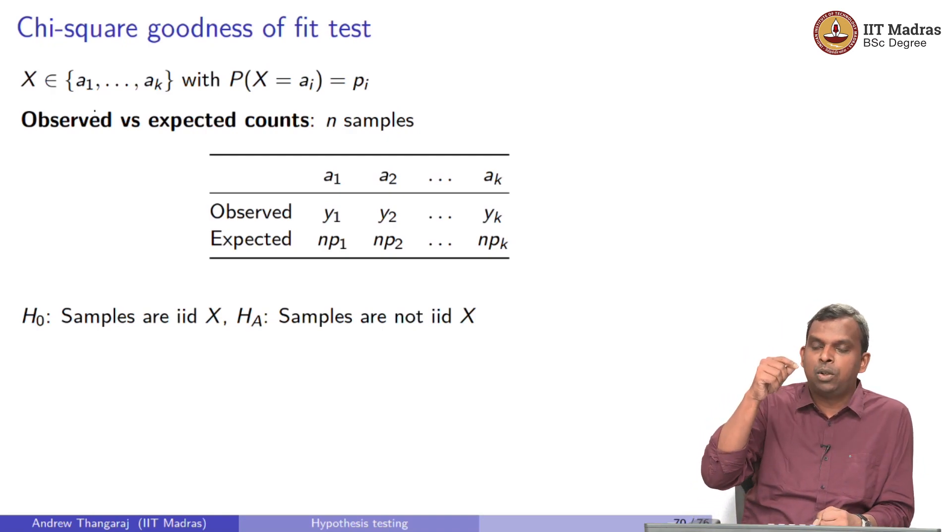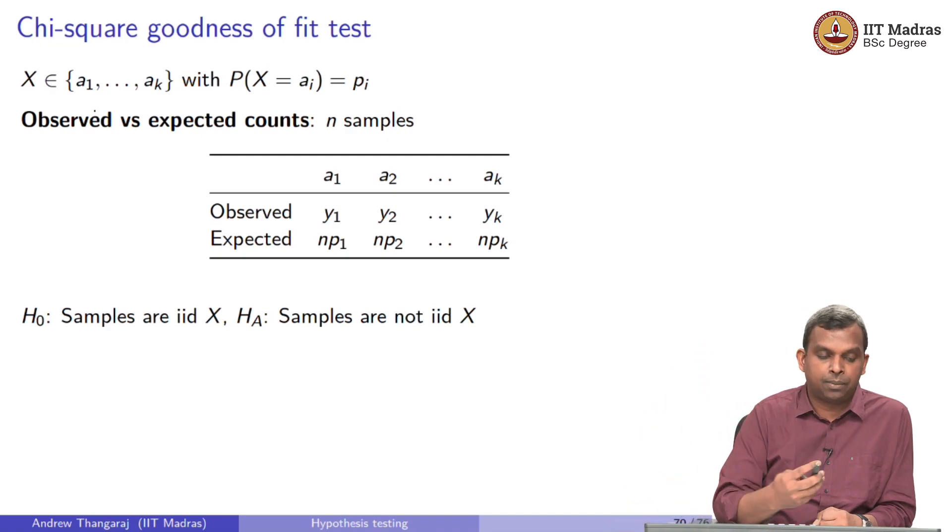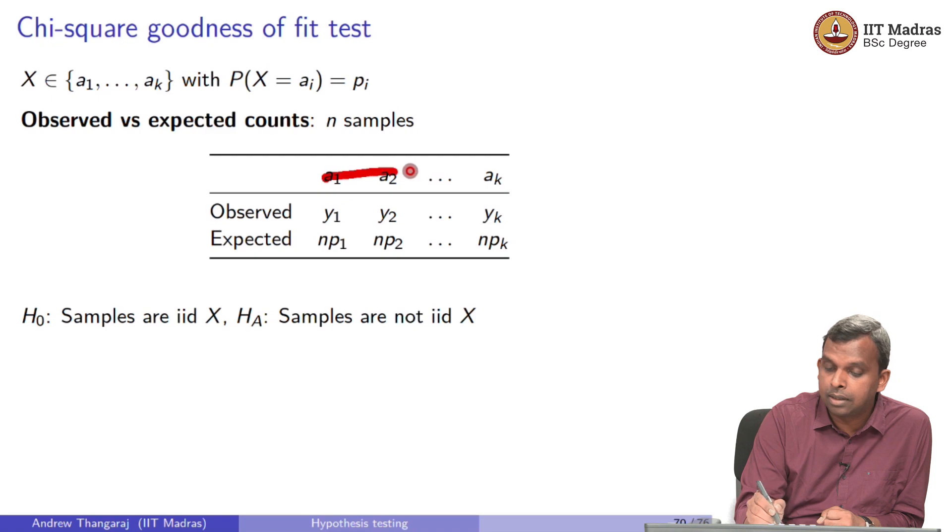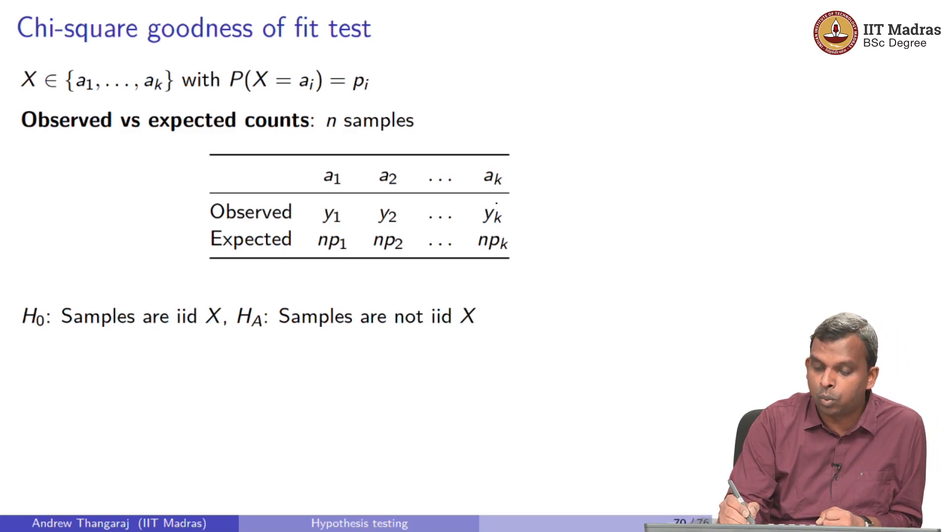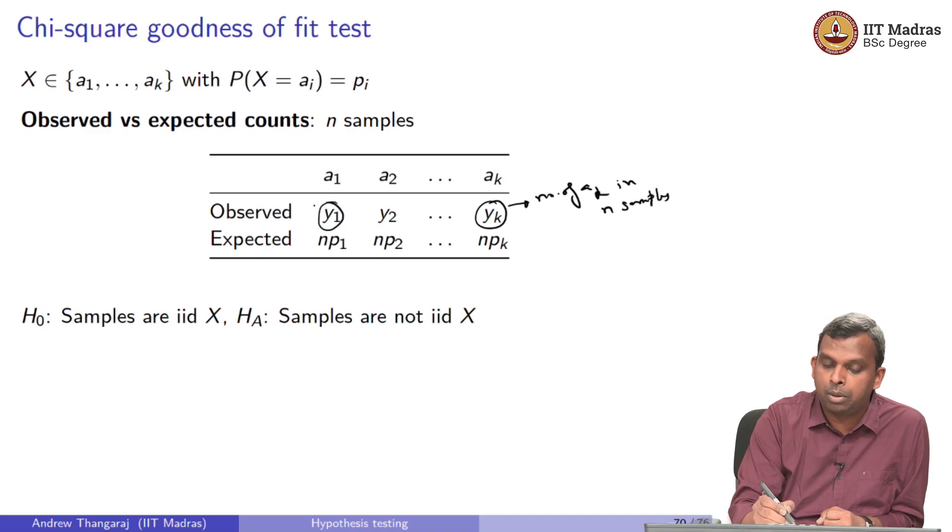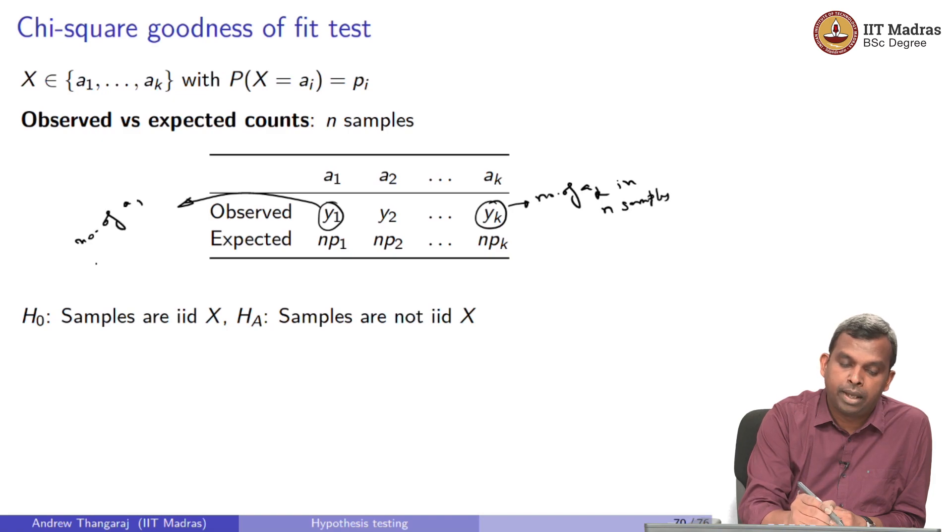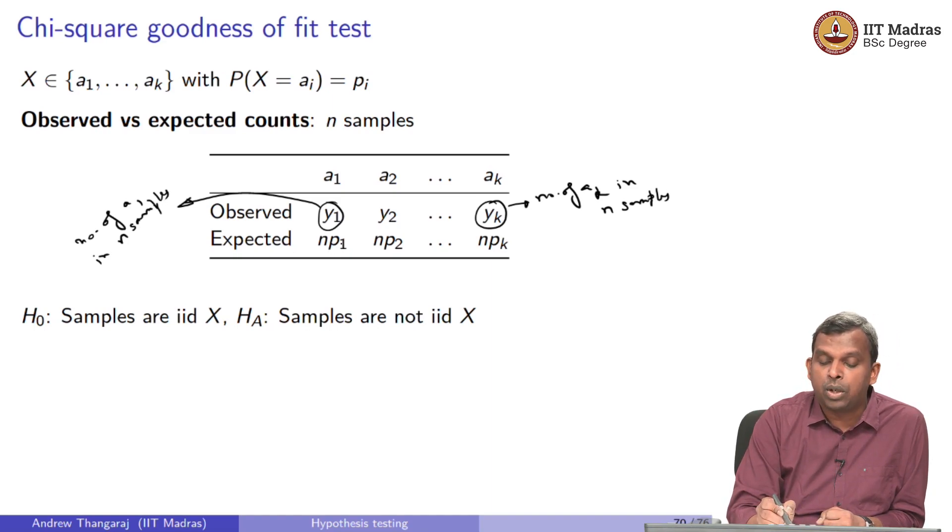And then we take n samples and do this observed versus expected count. The data, the possible values are a1, a2 through ak. The observed values, actually what you saw, the observed counts. This is the possible values for ak. The observed count, number of a1 in the sample ended up being this. For instance, yk is the number of ak in n samples. y1 will be number of a1 in n samples. Simple stuff. I am just writing it down. Below I write expected value. n times p1, you can see it is clearly the number of a1s I expect in n samples. As per the distribution, the distribution is given to you: np1, np2, npk. Y's are the actual counts, observed counts, expected counts are below.